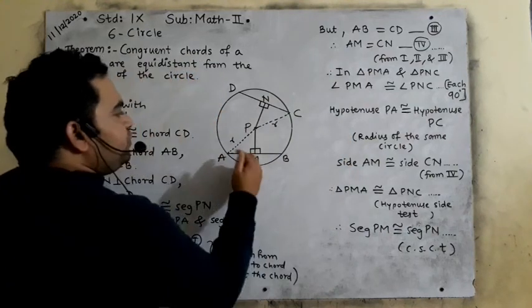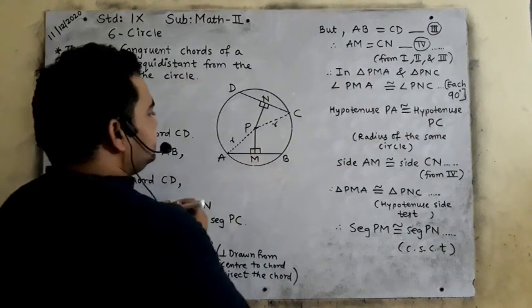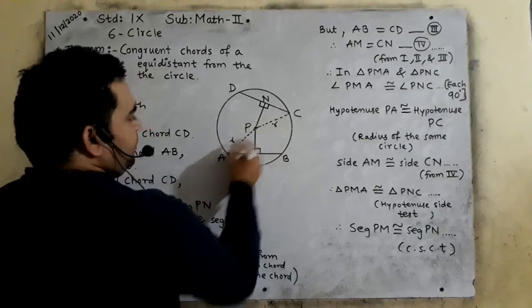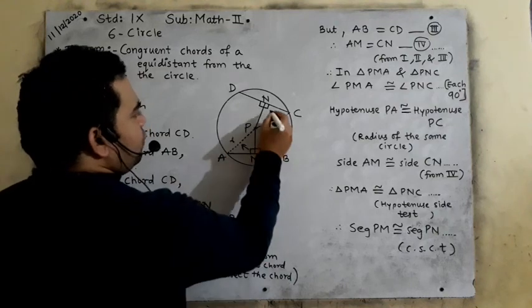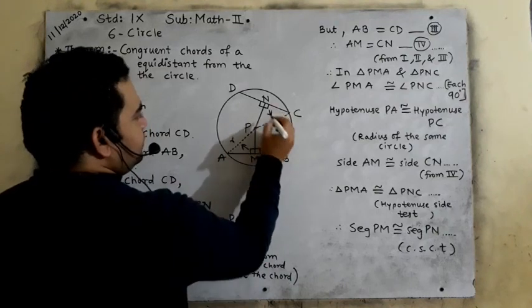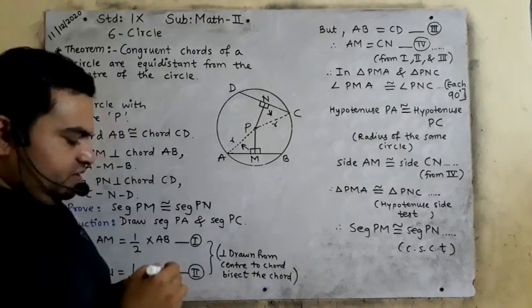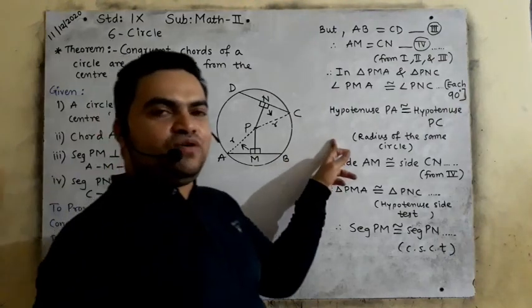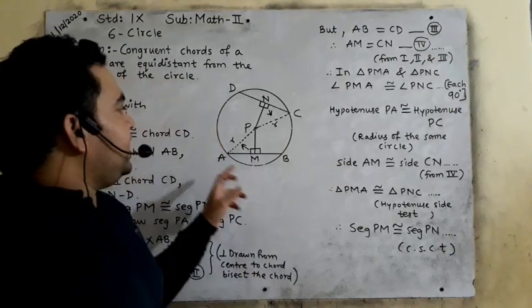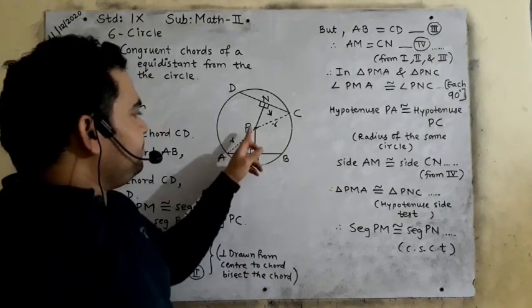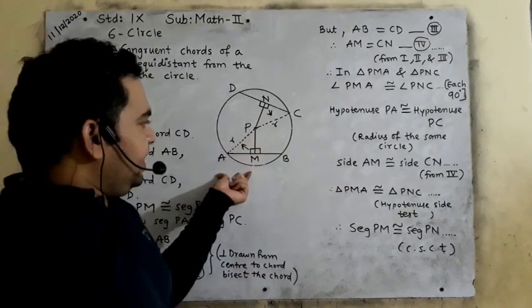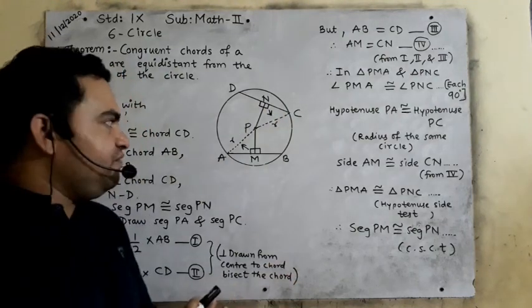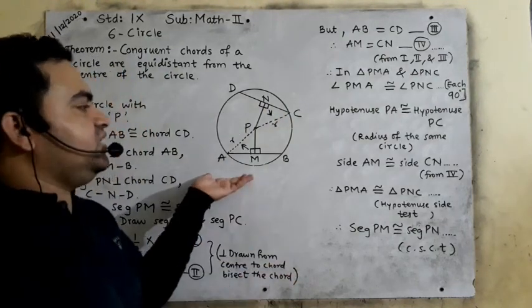The hypotenuse PA is congruent to PC — we already know this as radii of the same circle. Side AM is congruent to side CN, from the result we established. So we have the hypotenuse equal and one side equal for these two right triangles.